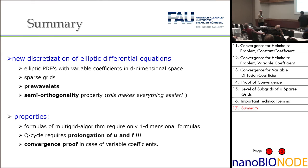In summary, we can discretize partial differential equations efficiently even in 3D and higher dimensions with sparse grids and variable coefficients, when we use semi-orthogonality and pre-wavelets. These are the important properties: they make the algorithms simpler — we only need to implement 1D formulas — and we obtain a very nice convergence theory. Thank you very much.